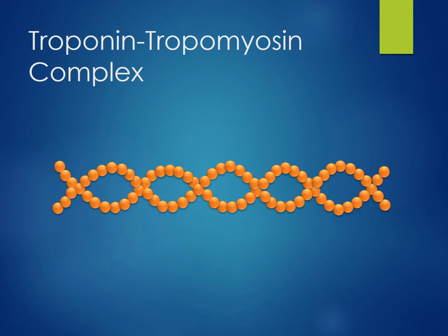When you examine a thin filament closely, it is composed of two strands of actin subunits in a helix. There are several active sites on the actin for myosin heads to bind to and cause sarcomere contraction. However, in a resting sarcomere, these active sites are covered by tropomyosin.